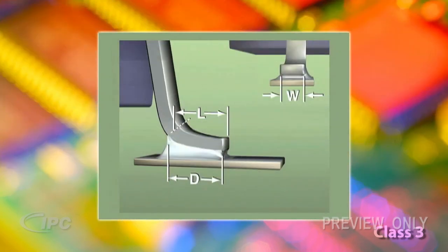If there is a short foot length, meaning that L is less than 3 lead widths, the minimum side joint length needs to be 100% of the foot length.